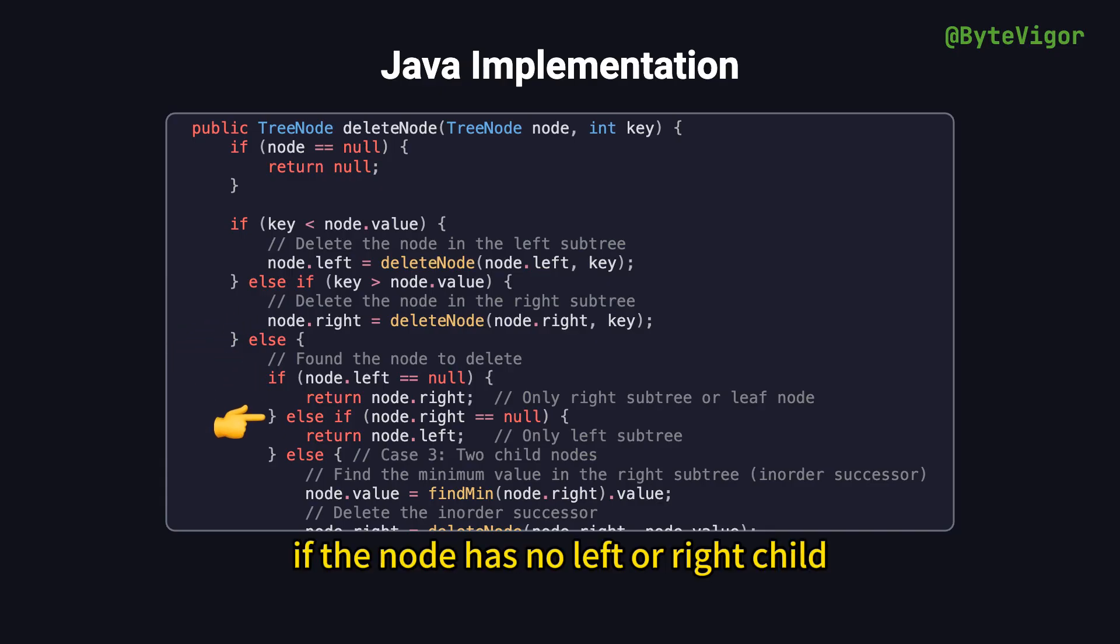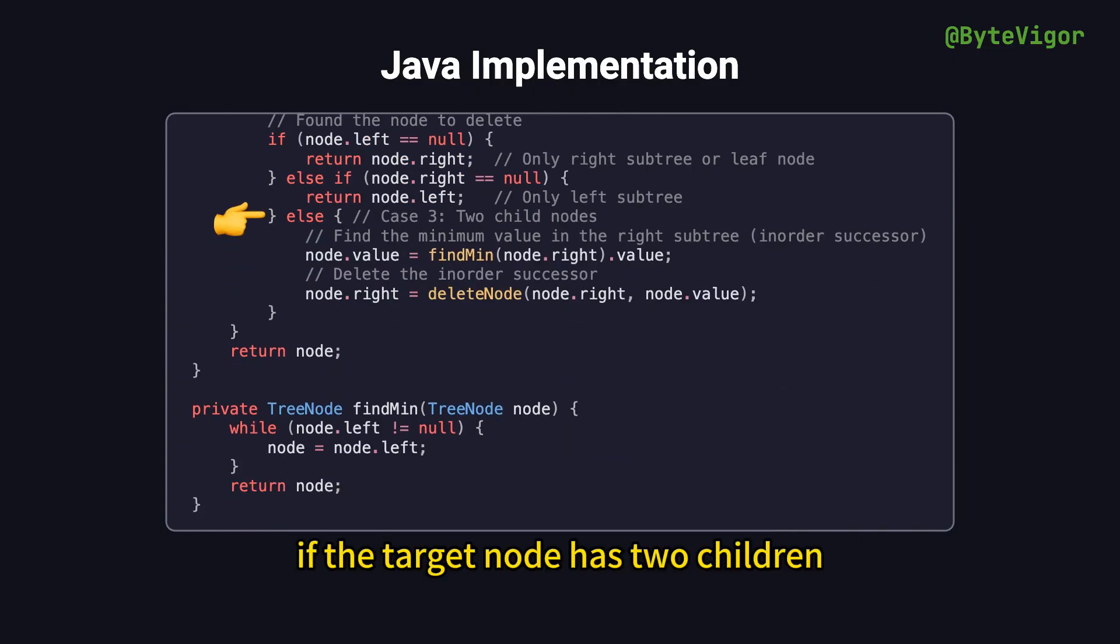If the node has no left or right child, it simply returns its other child, effectively removing the node. This logic handles both deleting a leaf node and deleting a node with one child.